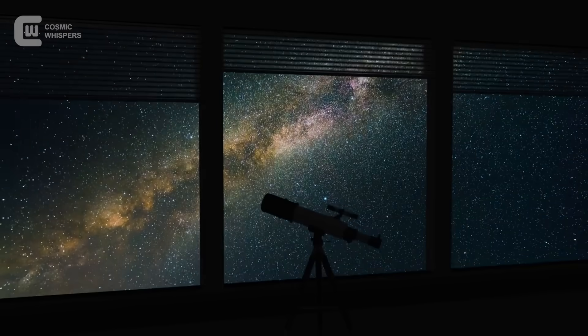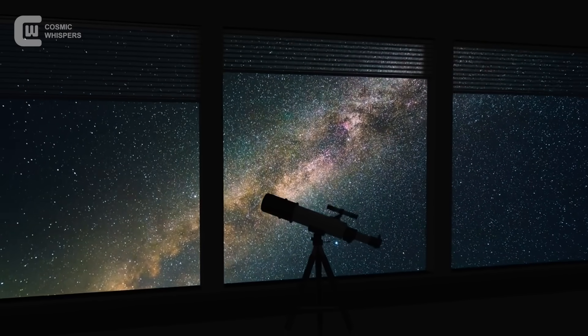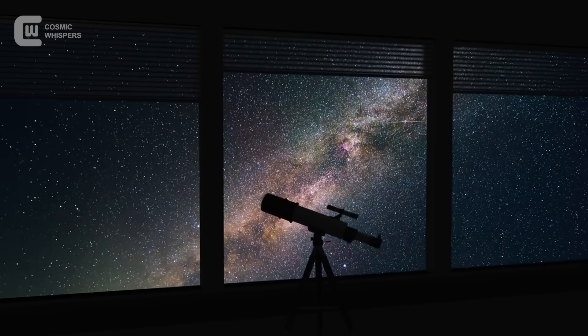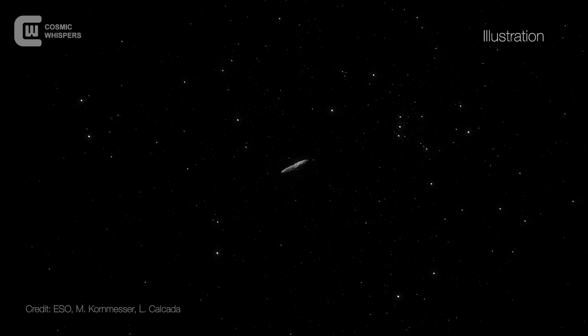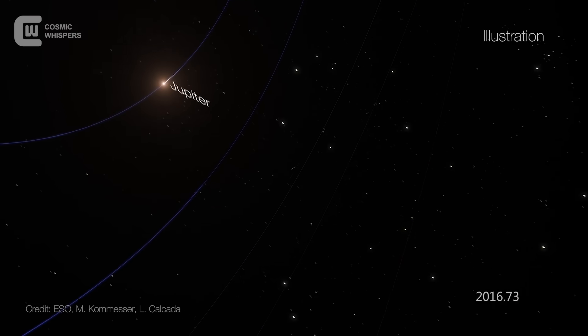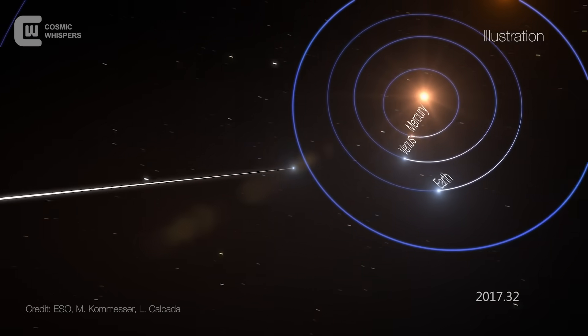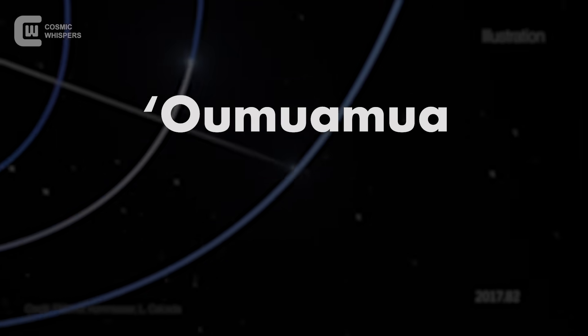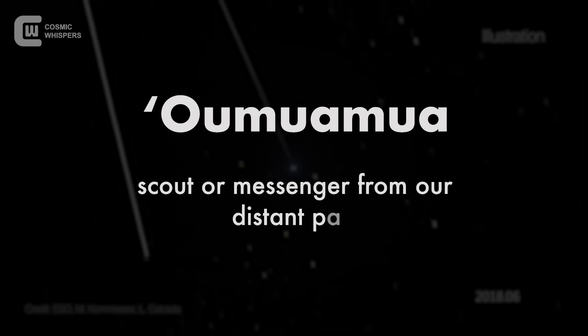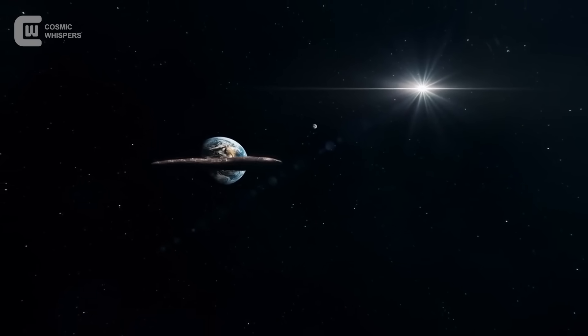On October 19, 2017, the Pan-STARRS telescope in Hawaii detected something moving unusually fast across the sky. At first, it seemed like just another asteroid. Until astronomers noticed something odd. It wasn't orbiting the sun. It was on a hyperbolic trajectory. A one-way path from outside the solar system. That made it the first confirmed interstellar object ever observed.